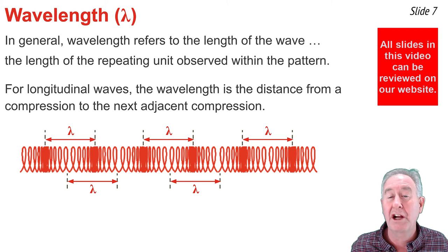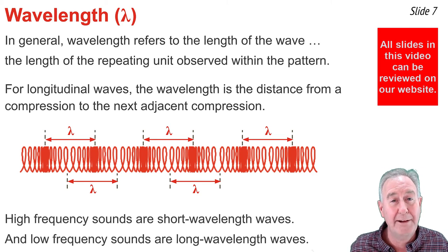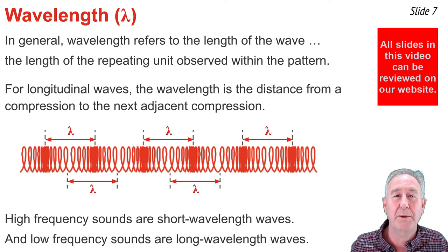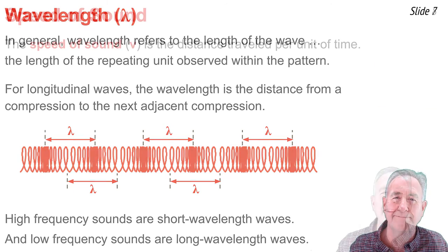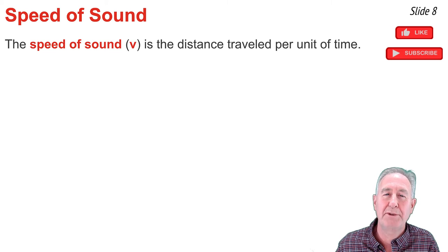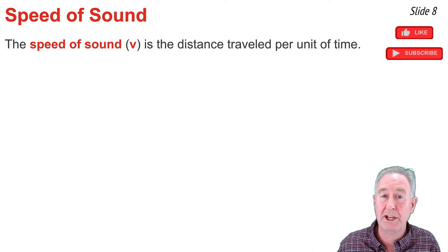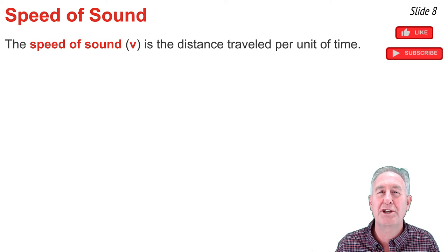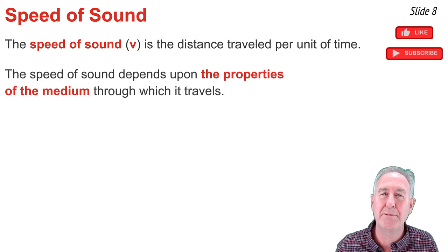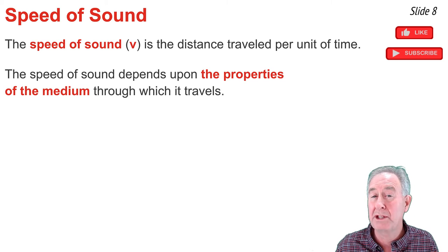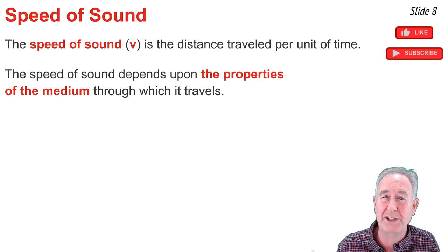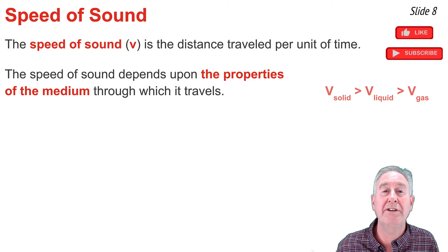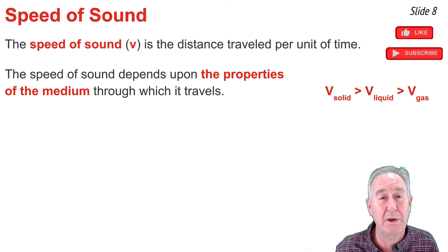Wavelength and frequency are inversely related to one another. A high-frequency sound wave is a short-wavelength wave, and a low-frequency sound wave is a long-wavelength wave. The speed of sound, like the speed of any object, is the distance traveled per unit of time — specifically, the distance a compression of the sound wave travels in some amount of time. The speed of sound is dependent upon the properties of the medium. One property is the state of matter: in general, the speed of sound in a solid is greater than in a liquid, which is greater than in a gas.